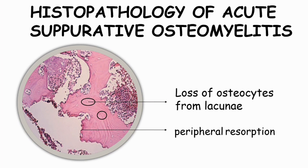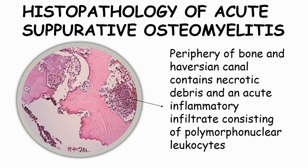Histopathology of Acute Suppurative Osteomyelitis: First, the bone shows loss of osteocytes from their lacunae, and then there will be peripheral resorption. The periphery of the bone and the Haversian canal contains necrotic debris and an acute inflammatory infiltrate, which consists of polymorphonuclear leukocytes.